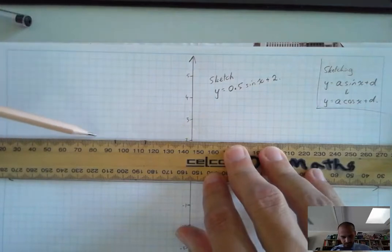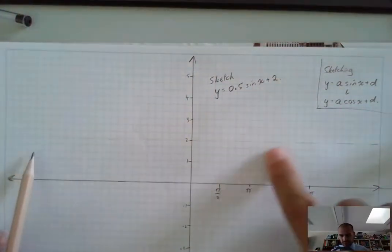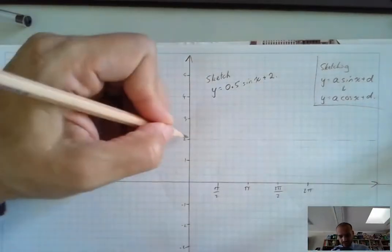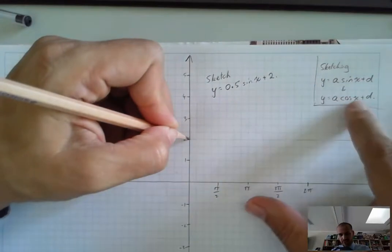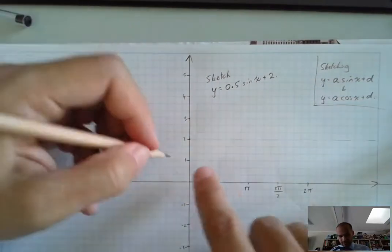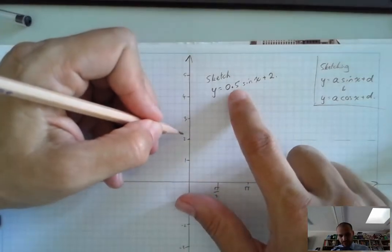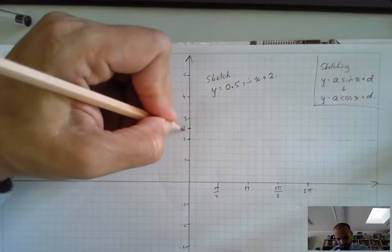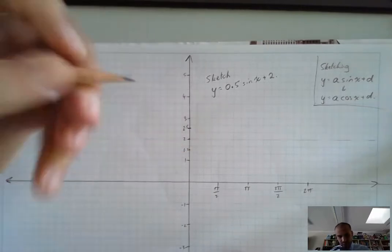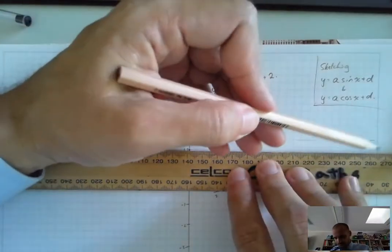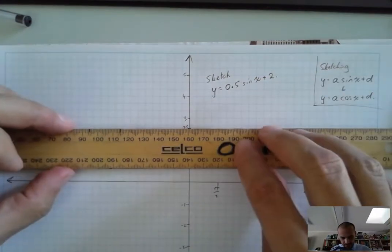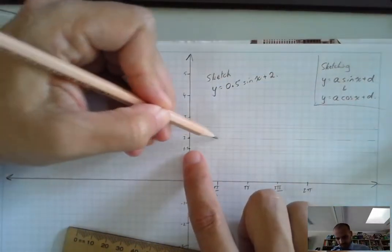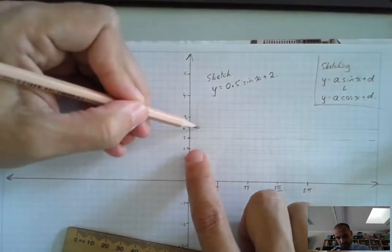I'm putting in a dotted line through positive 2 lightly — it's not part of the graph — but that's going to be my new center. It's a sine curve, which means it starts on the center line. If it were a cosine curve, it would start at the amplitude. The amplitude here is 0.5, so it's going to go 0.5 above 2, up to 2.5, and down to 1.5. I'll put in faint lines at 1.5 and 2.5 so I don't get confused.